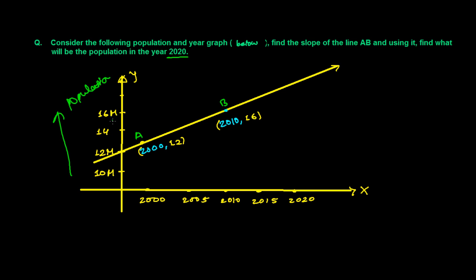Let's see. The question is saying, see here, this is the population. And here M stands for million. And this is the year. In year 2000, the population was 12 million, and in year 2010, the population was 16 million.